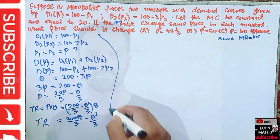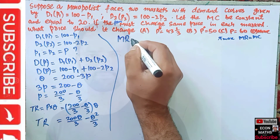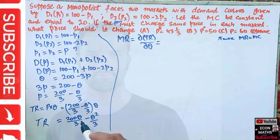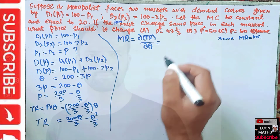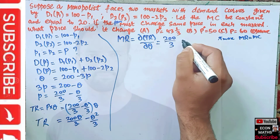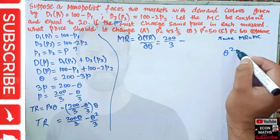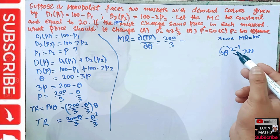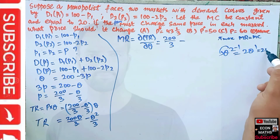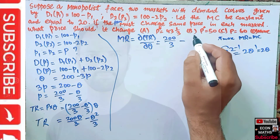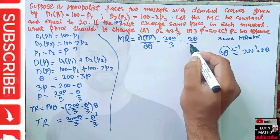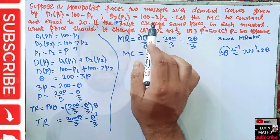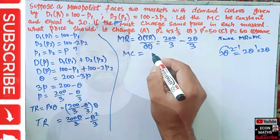Next we find marginal revenue, which is the derivative of total revenue with respect to quantity. The derivative of 200Q/3 is 200/3, and the derivative of Q²/3 is 2Q/3 by the power rule. So marginal revenue MR = 200/3 - 2Q/3. The marginal cost is constant at 20 in both markets.